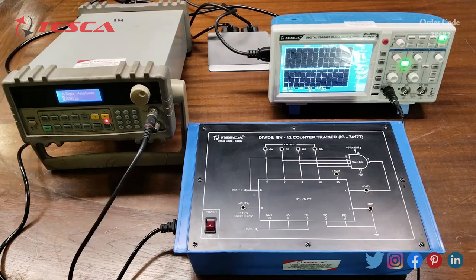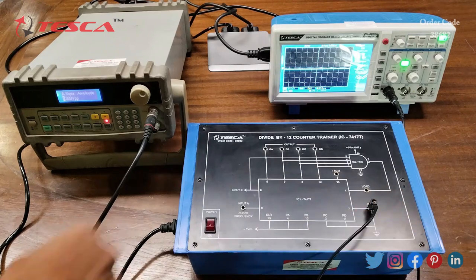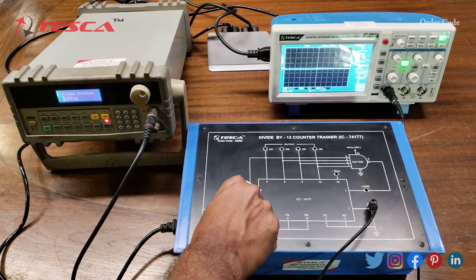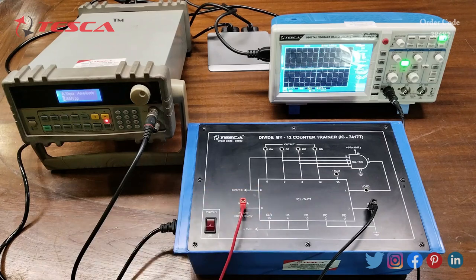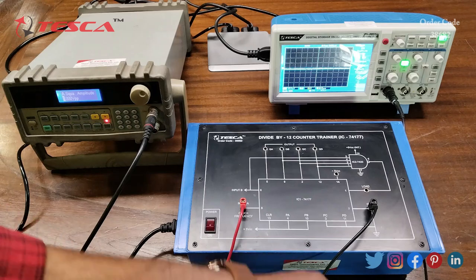We will give square wave as an input to this kit. The ground will be connected to the ground and the main terminal will be connected to the input block A like this.